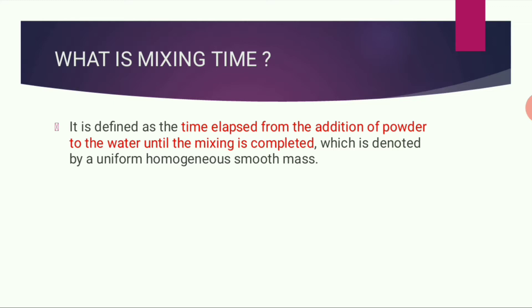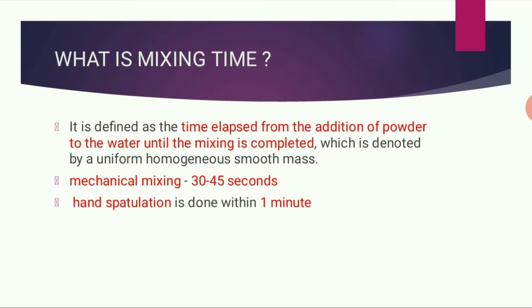What is mixing time? It is defined as the time elapsed from the addition of powder to the water until the mixing is completed, which is denoted by a uniform, homogeneous, smooth mass. For mechanical mixing it is 30 to 45 seconds, and hand spatulation is done within one minute.